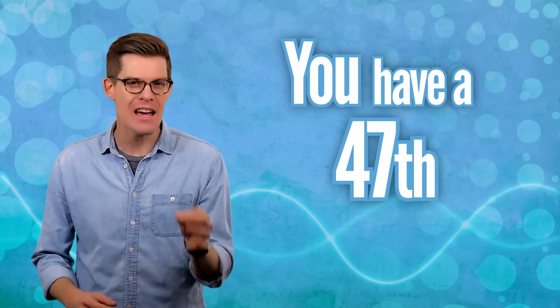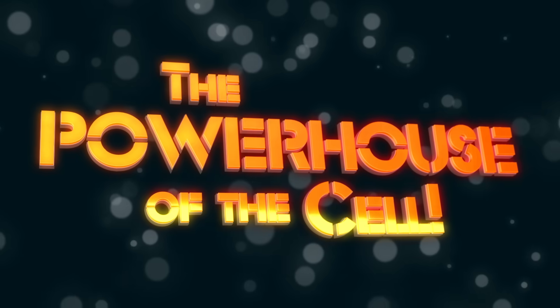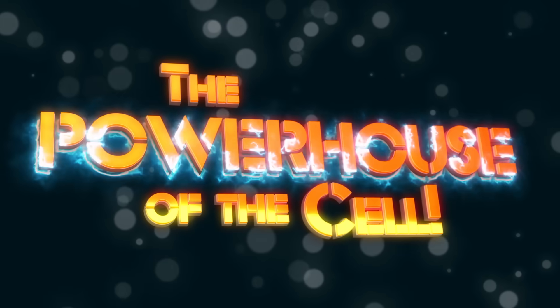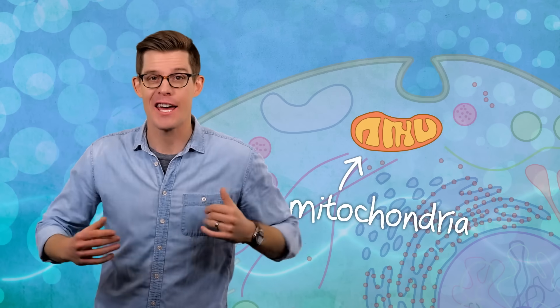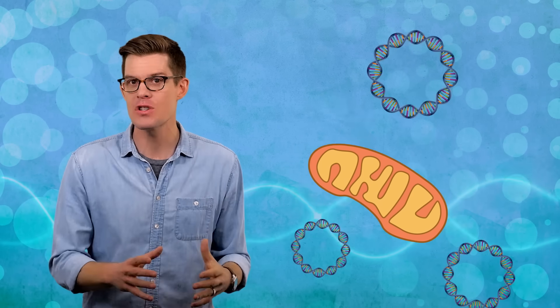You have a 47th chromosome. It lives in mitochondria, the powerhouse of the cell, so we're doing that again. Mitochondria used to be free swimming. They have their own genetic material. Unlike your other 46 chromosomes, there's no shuffling when it's passed between generations.